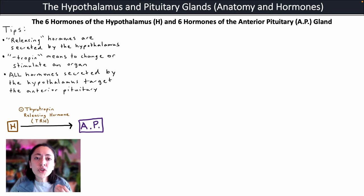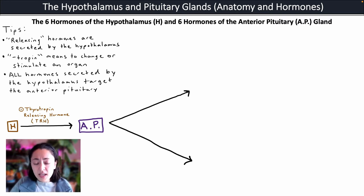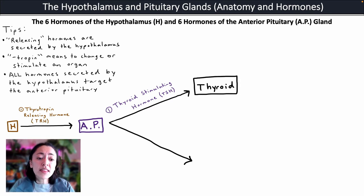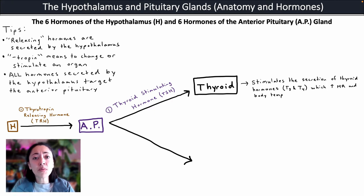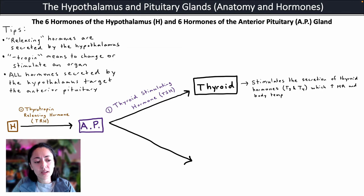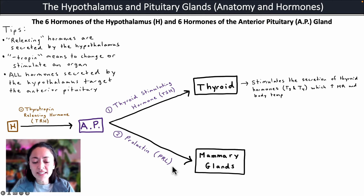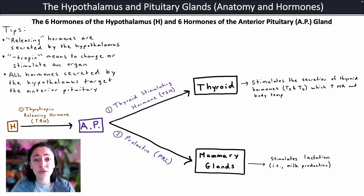Thyrotropin releasing hormone will trigger the release of two hormones from the anterior pituitary gland. The first is thyroid stimulating hormone or TSH, which targets the thyroid gland and stimulates the secretion of thyroid hormones T3 and T4, which increase metabolic rate and body temperature. Thyrotropin releasing hormone will also trigger the anterior pituitary gland to secrete prolactin or PRL. Prolactin targets the mammary glands in the breast and stimulates lactation — in other words, milk production.